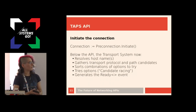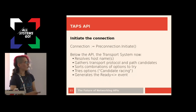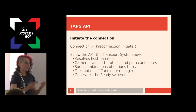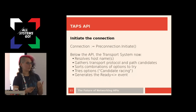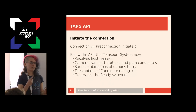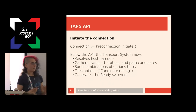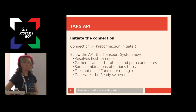Then we would initiate this connection. The application just calls initiate and waits for the callback. Beneath, the transport system will resolve host names, gather protocol and path candidates, and sort those candidates in some order — for example, whether the transport protocol meets the preferred features the application wanted. It would start with the first option of a combination of a local interface, a transport protocol, and a specific endpoint. If it doesn't work, maybe after 100 milliseconds or some other timeout, it would try a different protocol. At some point, when it has successfully established a connection, it would generate the ready event, and then the application knows the connection is ready.